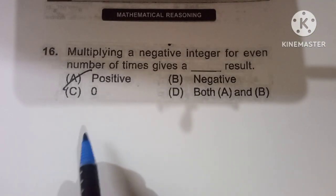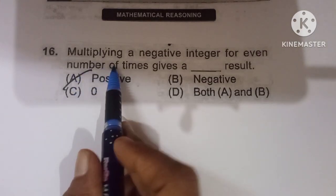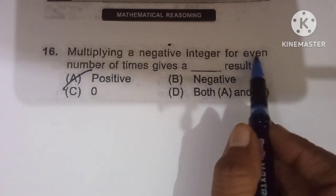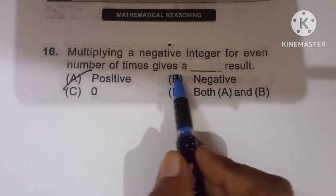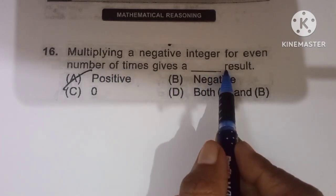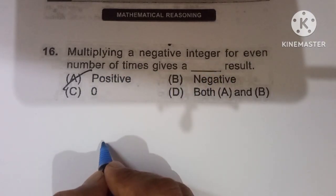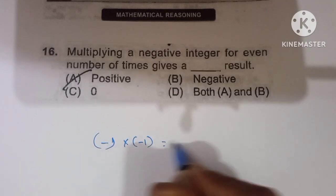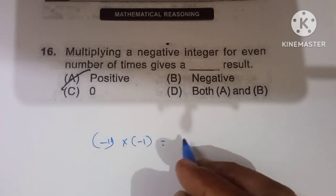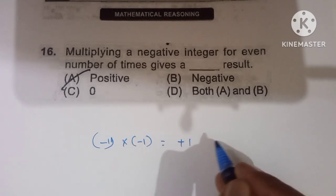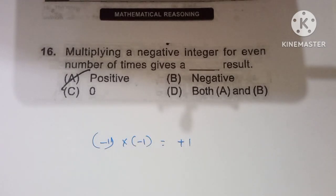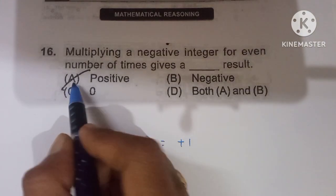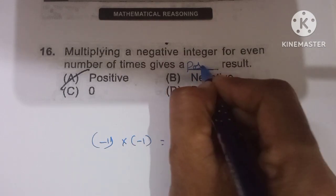Sixteenth question: multiplying a negative integer an even number of times gives what result? Minus times minus is plus, and minus 1 times minus 1 is plus. So multiplying a negative number an even number of times gives a positive result. Option A is the correct one.